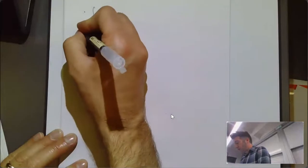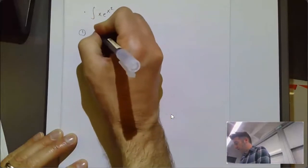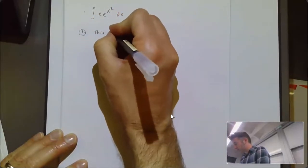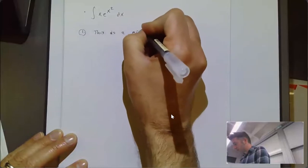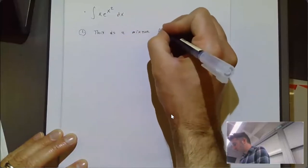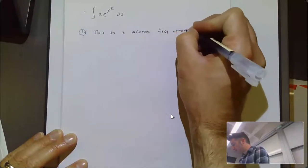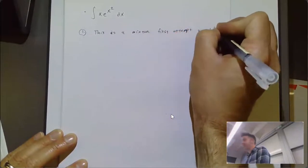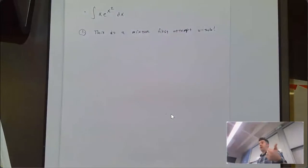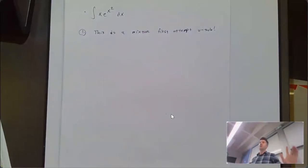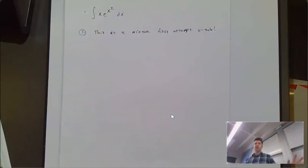But before thinking of integration by parts, I should first attempt a u-substitution, because it'll work sometimes and u-sub is usually easier. Most of the time, u-sub works or integration by parts works, and they don't both work. There are rare exceptions, but you should definitely try u-sub first. Here, u-sub actually does work.